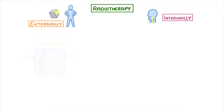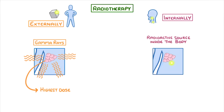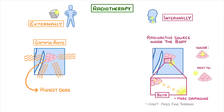External sources normally emit gamma rays that are targeted at the cancer site from lots of different angles, so that only the cancer site gets the highest dose. The internal method is where we place the radioactive source inside the body, either inside the cancer itself or next to the cancer. This method usually uses beta radiation, which is more damaging than gamma rays, but can't pass as far through the body.